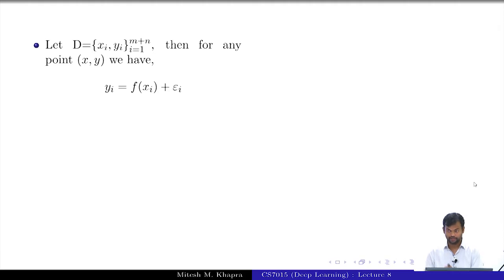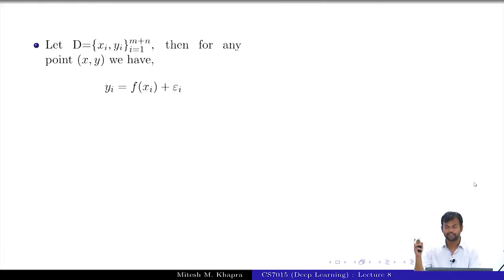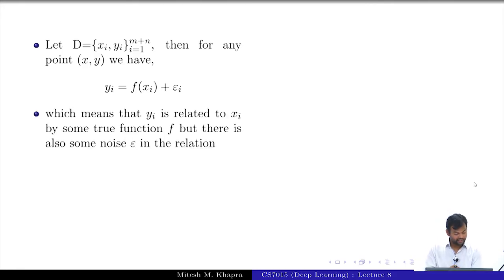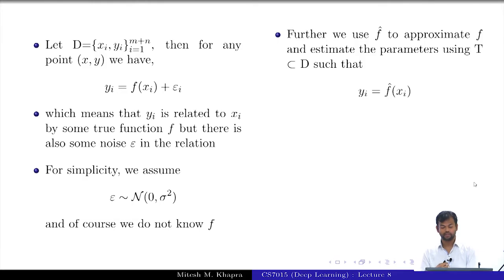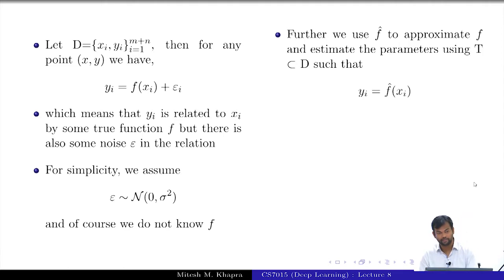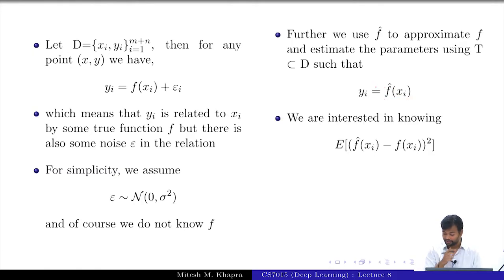We are given m training points and n testing points. We know there is a true function between outputs and inputs, and we accept some noise in this relation. The noise comes from a normal distribution with zero mean and small variance. We never know f, but we approximate it with f-hat, learning its parameters from the training data.